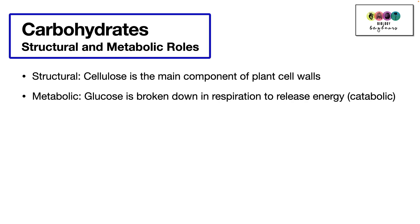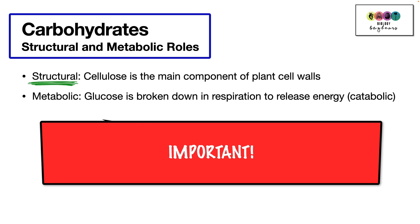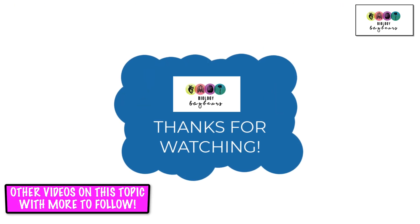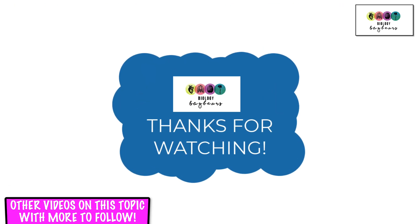To finish our study of carbohydrates, we give an example of a structural and a metabolic role. The structural role example is cellulose, the main component of plant cell walls. The metabolic role example is glucose broken down in respiration to release energy. That concludes our study of carbohydrates and our introduction to biomolecules. There are other videos and you have your textbook — best of luck.